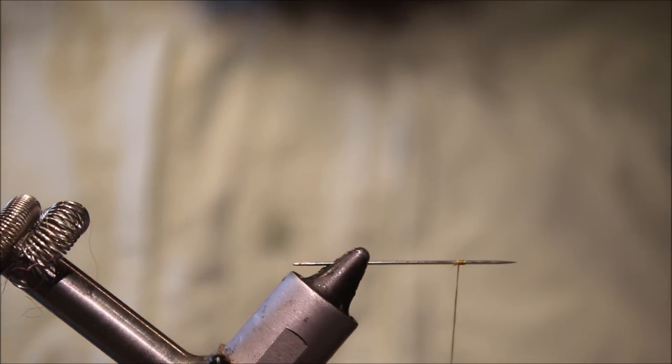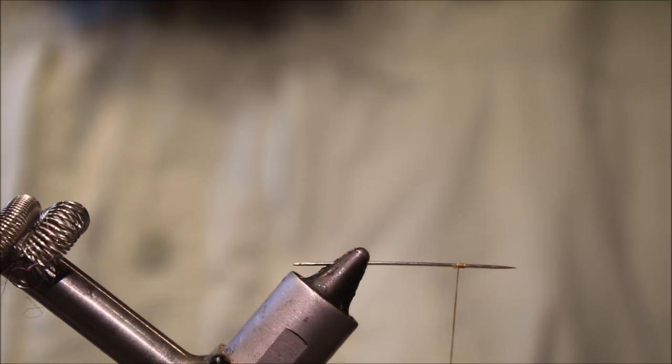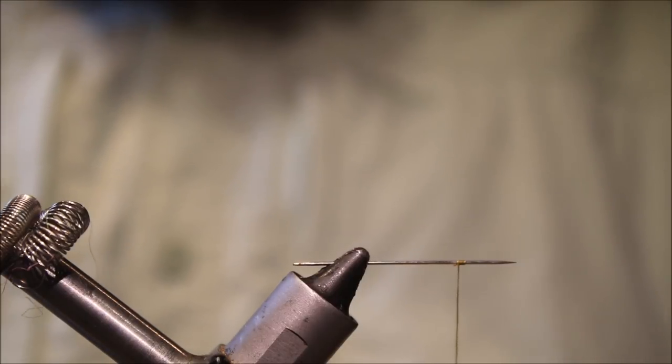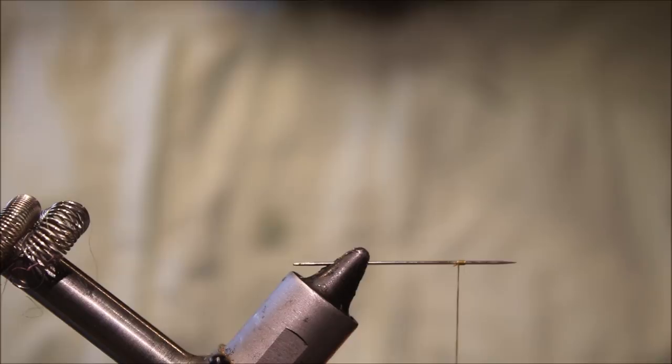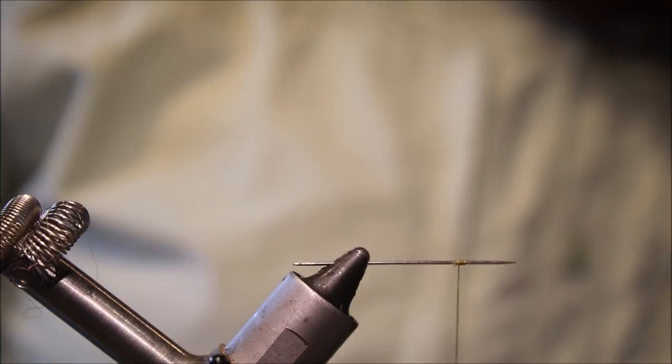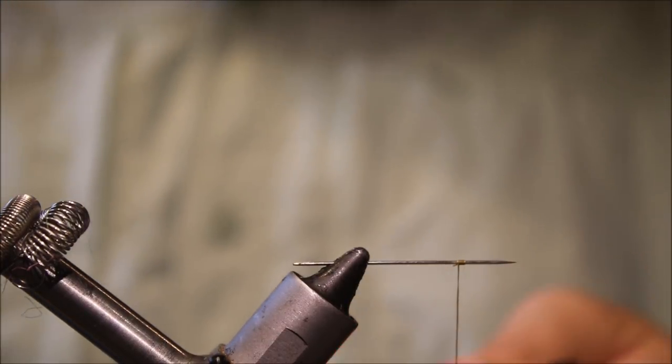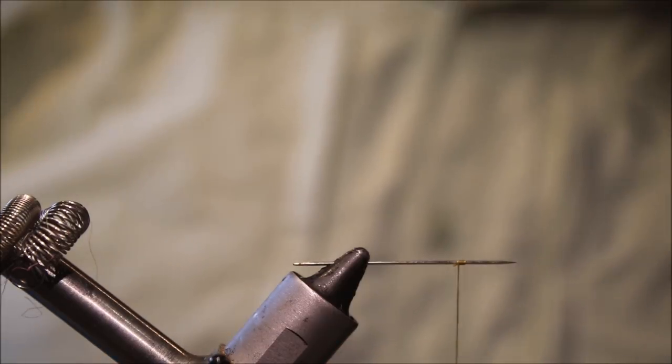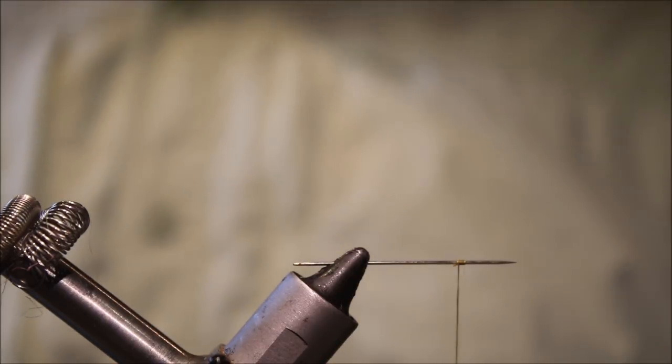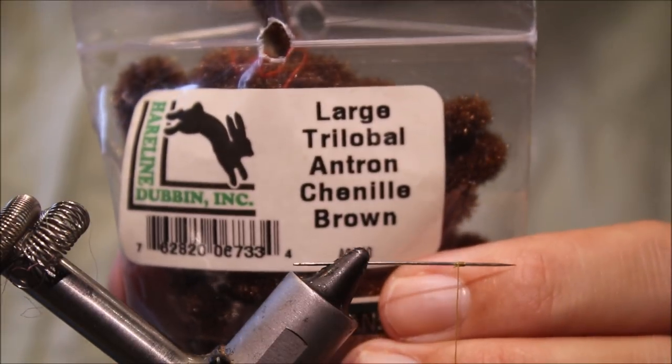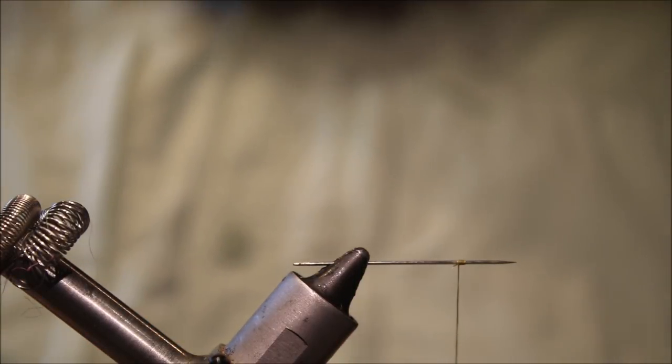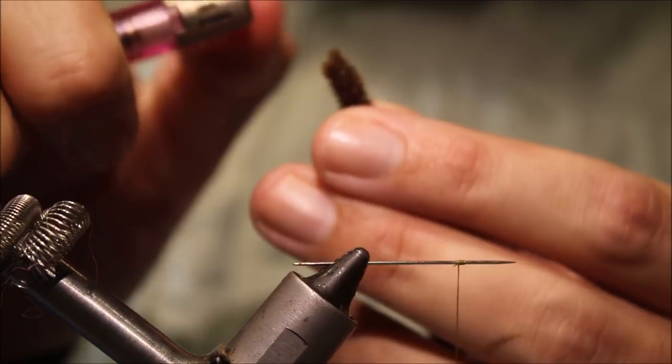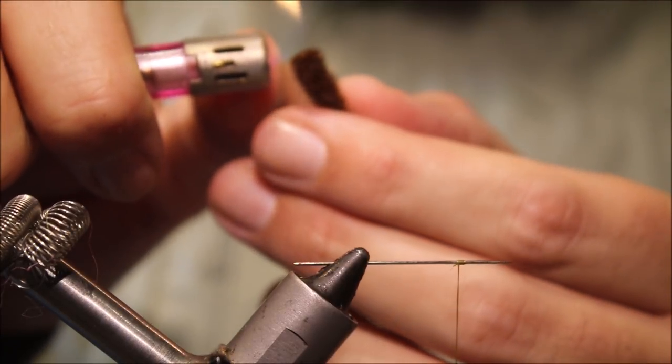And then I'll take about five inches of chenille. Obviously you can adjust the length of the chenille to suit yourself. This is a Trilobo Antron chenille, and it's the large size I use. I've just got to melt the end just to seal it all in.